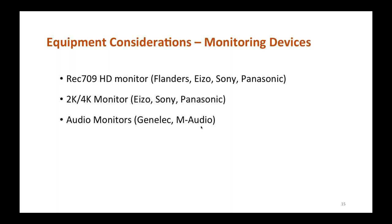Film scanners typically provide real-time HD SDI video outputs for monitoring. When purchasing a film scanner, you'll also need to invest in a good HD Rec. 709 color space monitor. Several HD monitors have onboard waveform monitors and vectorscopes for quality control purposes. Vendors include Flanders, EZO, Sony, and Panasonic. You'd also need audio monitors for monitoring audio when scanning tracks — vendors include Genelec and M-Audio.